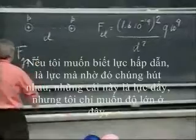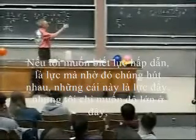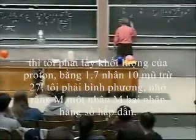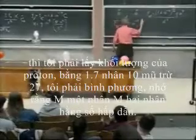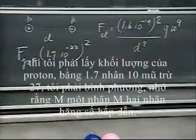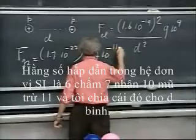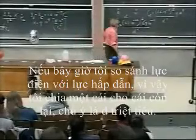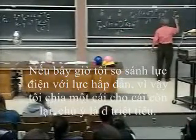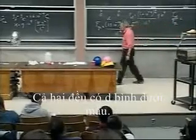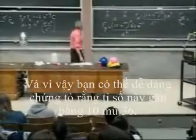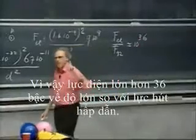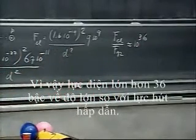If I want to know the gravitational force — which is the attractive force between them — I take the mass of the proton, which is 1.7 times 10 to the minus 27, squared, times the gravitational constant 6.7 times 10 to the minus 11, divided by d squared. If I compare the electric force with the gravitational force, d squared cancels, and you will easily be able to show that this ratio is roughly 10 to the 36. So the electric force is 36 orders of magnitude more potent than the gravitational attraction.